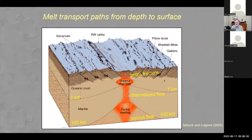We know there has to be channelized flow in the intermediate region because of the chemical signature of erupted magmas — the magma is out of equilibrium with the surrounding rock. If you're flowing by porous flow with intimate contact between melt and grains, there should be chemical equilibrium. But there isn't: the magma that erupts is not in equilibrium with the peridotite or lherzolite in this transition region.